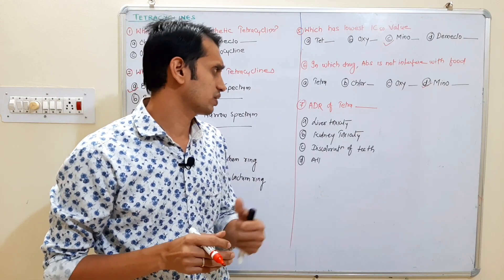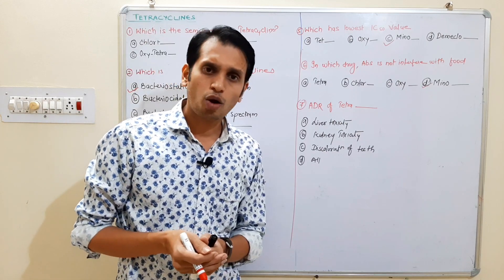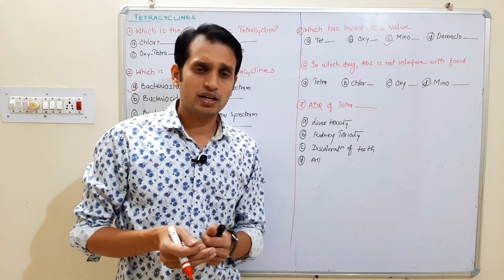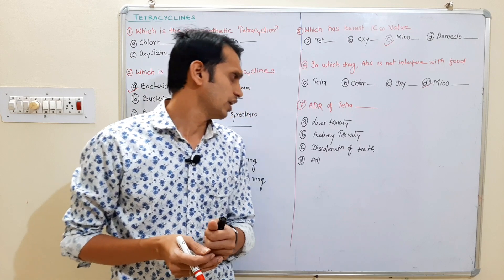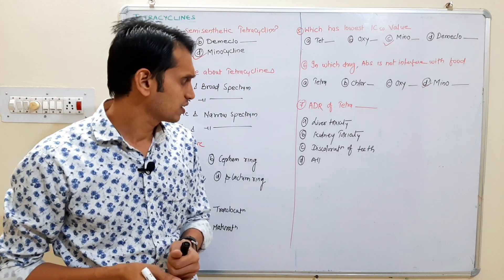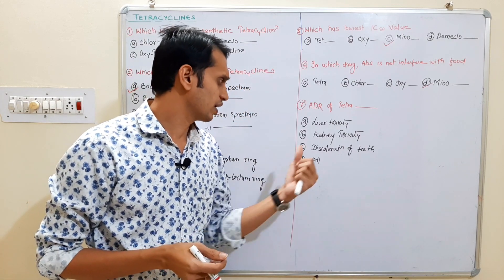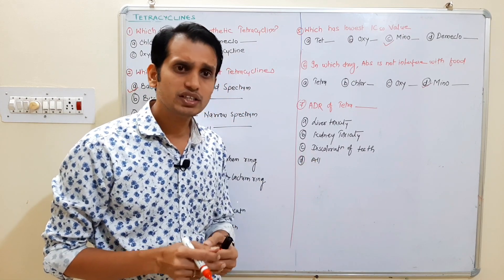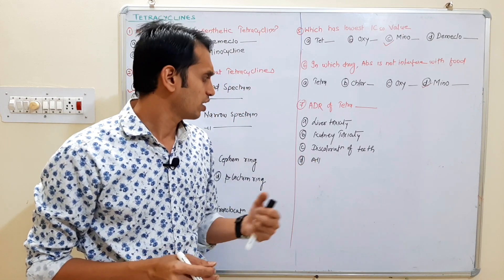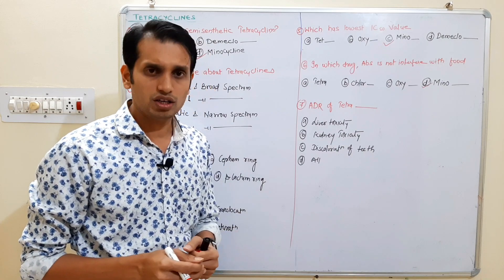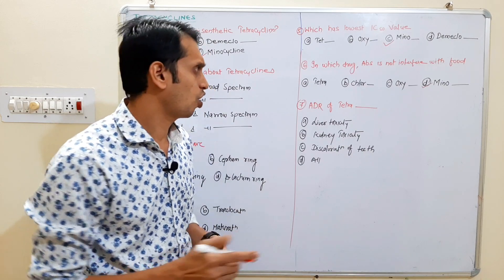Question 7: The adverse drug reactions of tetracyclines include — A: liver toxicity, B: kidney toxicity, C: discoloration of teeth, D: all of the above. The answer is D — all of the above.